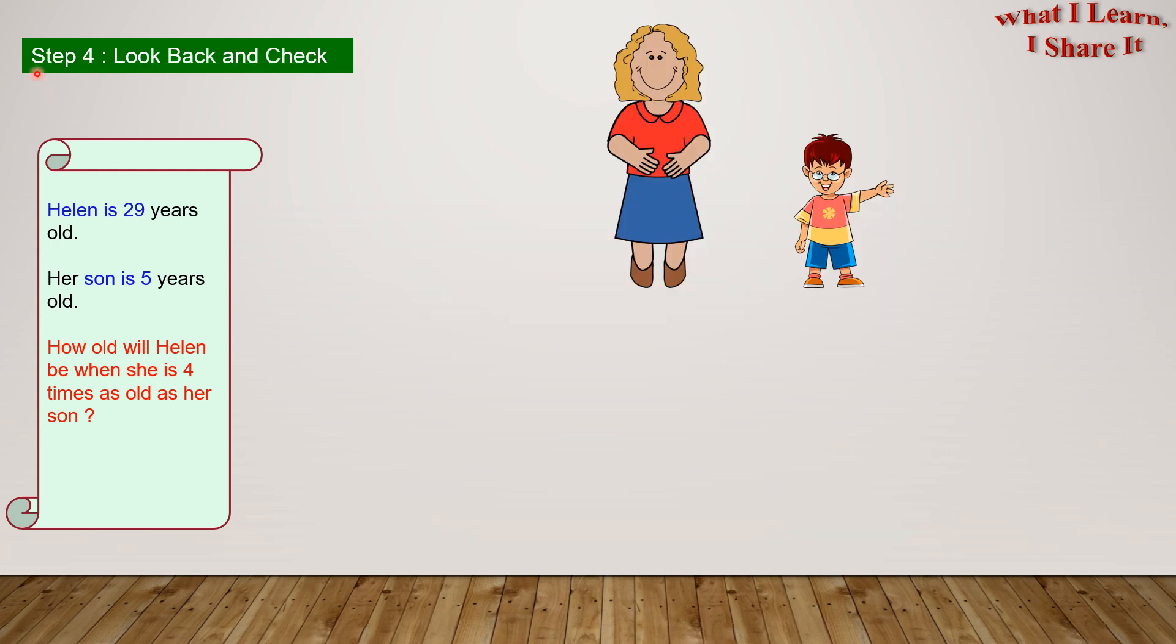Step 4, look back and check. So, let's see the present age. 29 years for Helen, and 5 years for her son. After 3 years, Helen's age, which equals 29 years, plus 3 years.